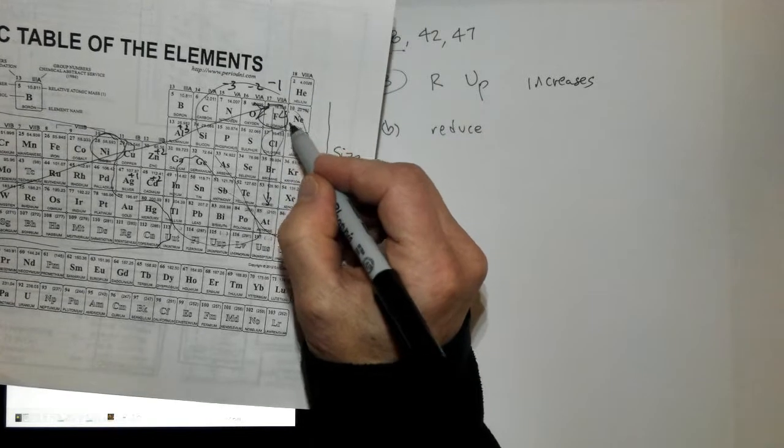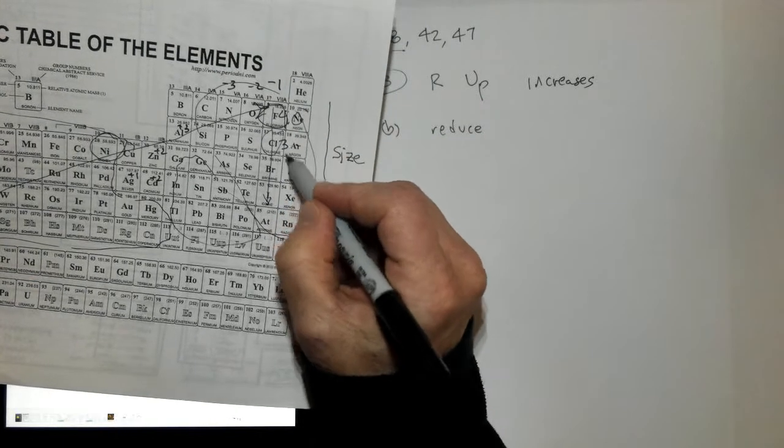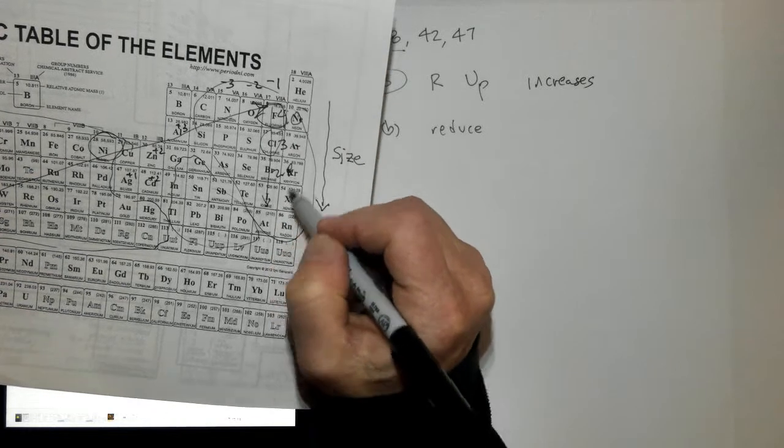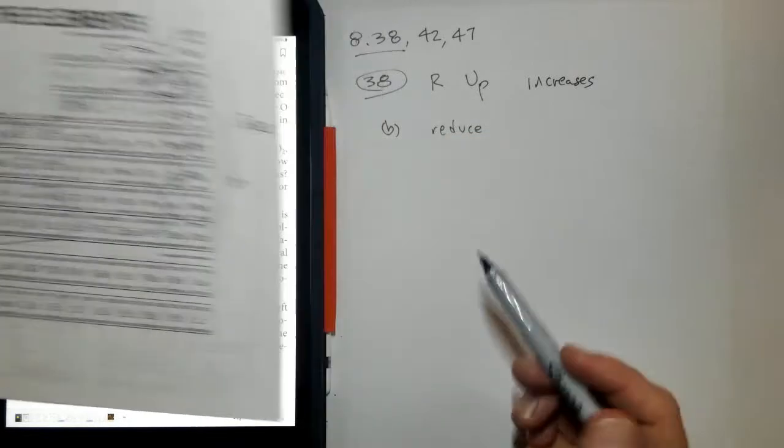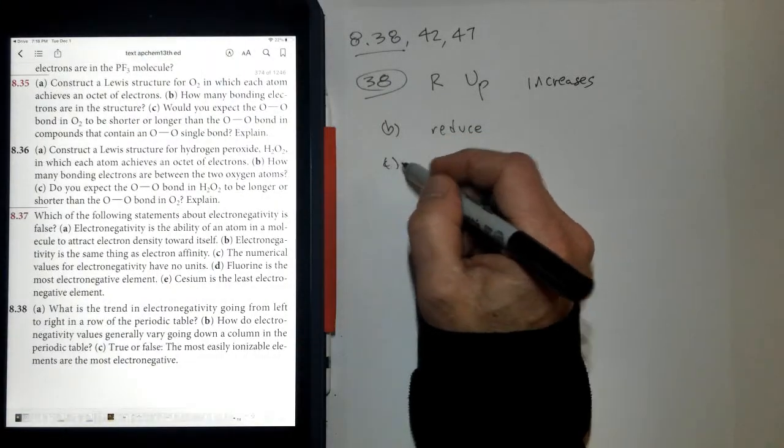Fluorine is 4.0 on the electronegativity scale, chlorine is about 3, bromine is about 2.8, iodine is about 2.5 or something like that. So it goes down as you go down a group or family. Letter C: